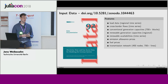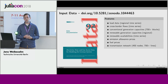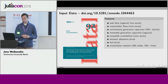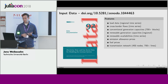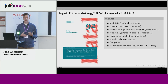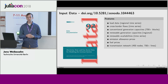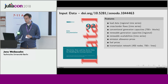The data we're using is also already open and accessible — it's deposited in the Zenodo repository. It consists of load data, cross-border flows, conventional generation capacities with more than 700 power plant blocks, renewable generation and availabilities, CO2 prices, fuel prices, and the full German transmission network, which in our case consists of 450 nodes and more than 700 lines, and even more circuits than that.